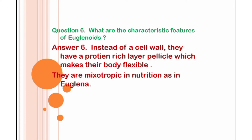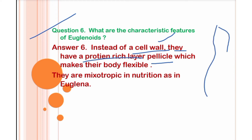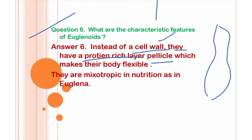Next question: what are the characteristic features of euglenoids? Instead of a cell wall, they have a protein-rich layer called the pellicle, which makes their body flexible — that is why Euglena's body is quite flexible. They are mixotrophic in nutrition, as in Euglena, meaning they show both types of nutrition — autotrophic as well as heterotrophic — depending upon the environmental conditions.